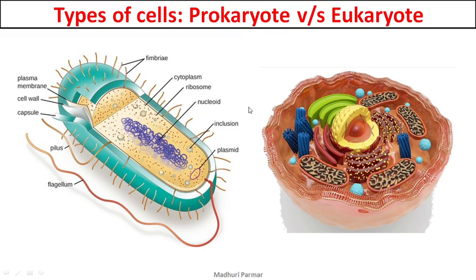We already discussed what a cell is and what it is made up of. Today we will be discussing the types of cells. There are two types of cells: prokaryotes or eukaryotes. If anybody gives you any cell or any living organism, you can always classify them as either prokaryote or eukaryote. Now let us understand the name.